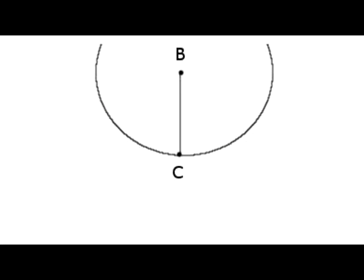First, we'll draw a circle with center B and radius BC to construct the first leg of the right triangle ABC.